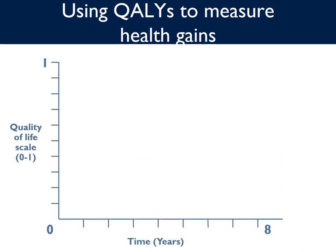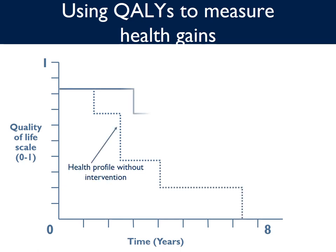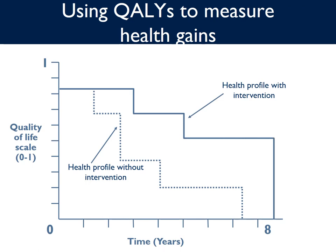How do QALYs work? This figure shows a quality adjusted life profile of a person without an intervention and with an intervention. The number of QALYs is calculated by multiplying a person's life expectancy — represented on the x-axis as years of life lived — by the value of the quality of life experienced in each period, represented on the y-axis, measured by an index score of 1 or less, where 0 is equivalent to death and 1 is full health. Scores can be less than 0 for health states regarded as worse than death.